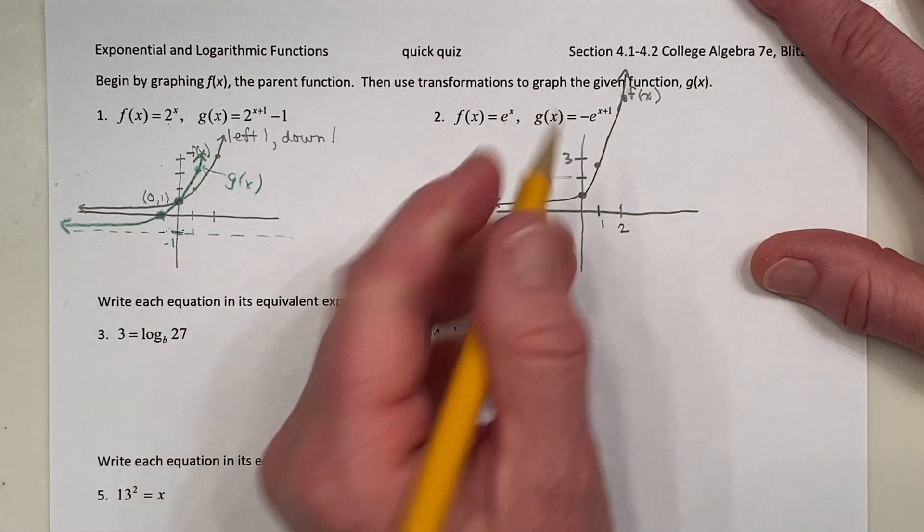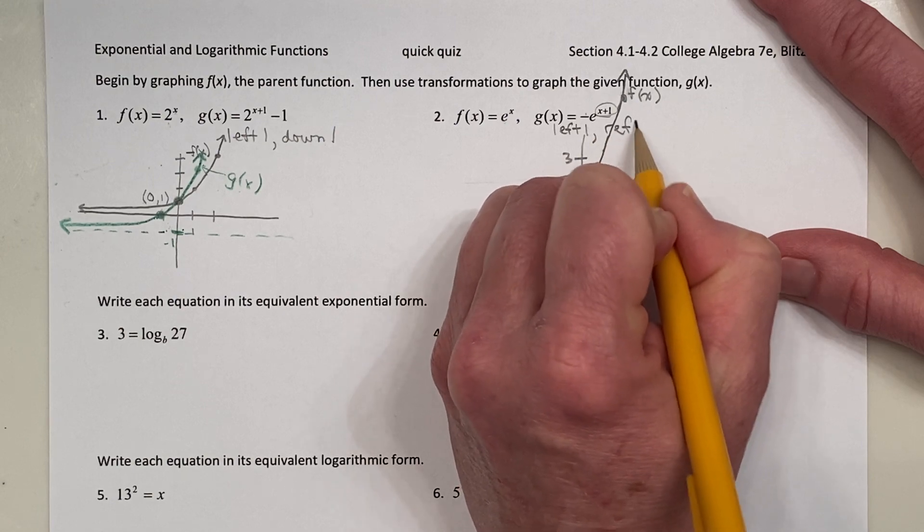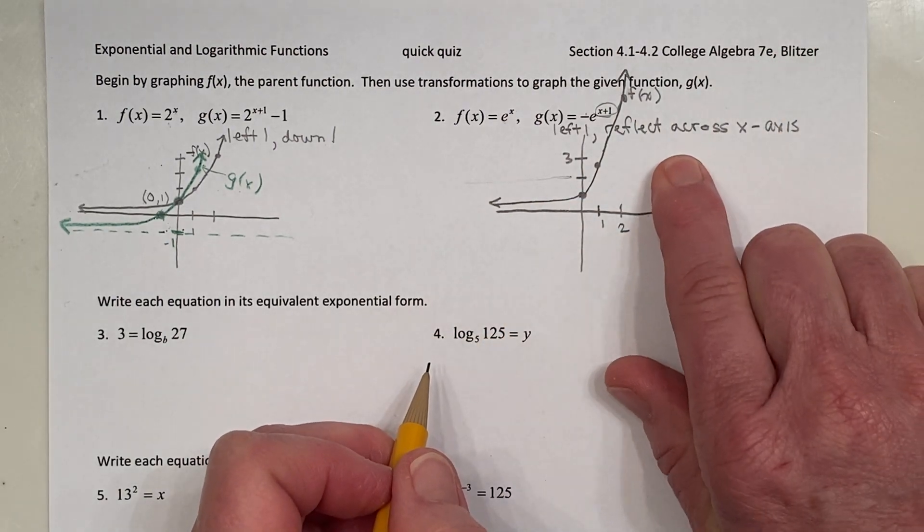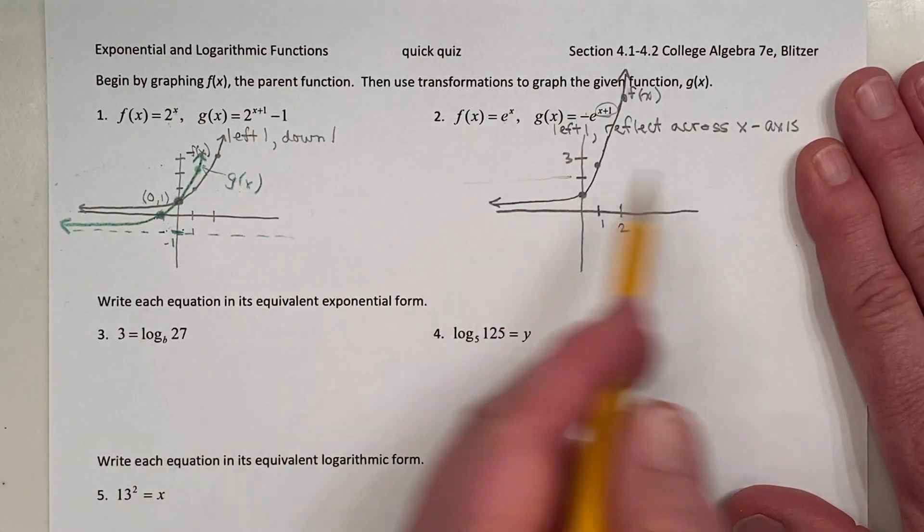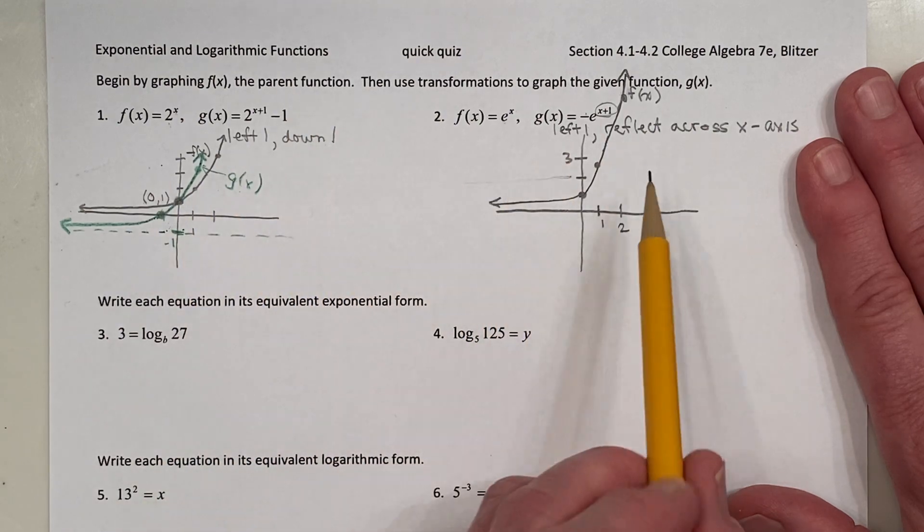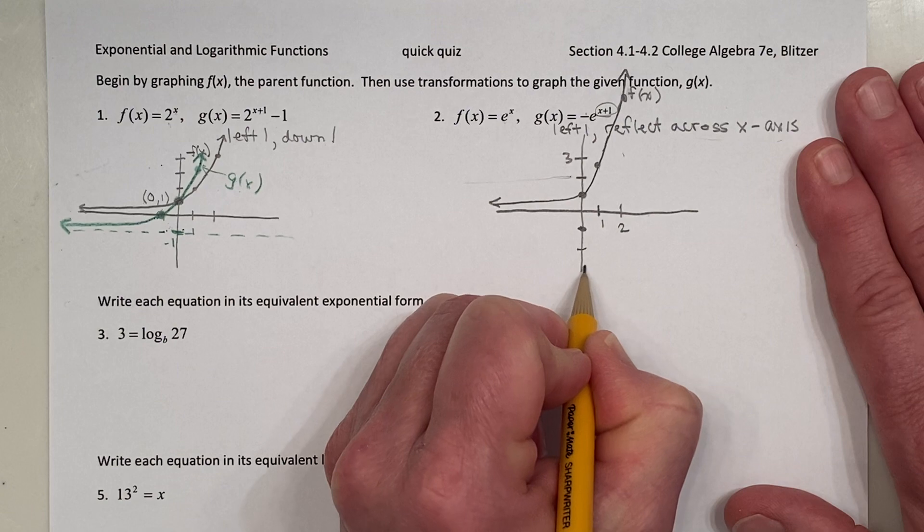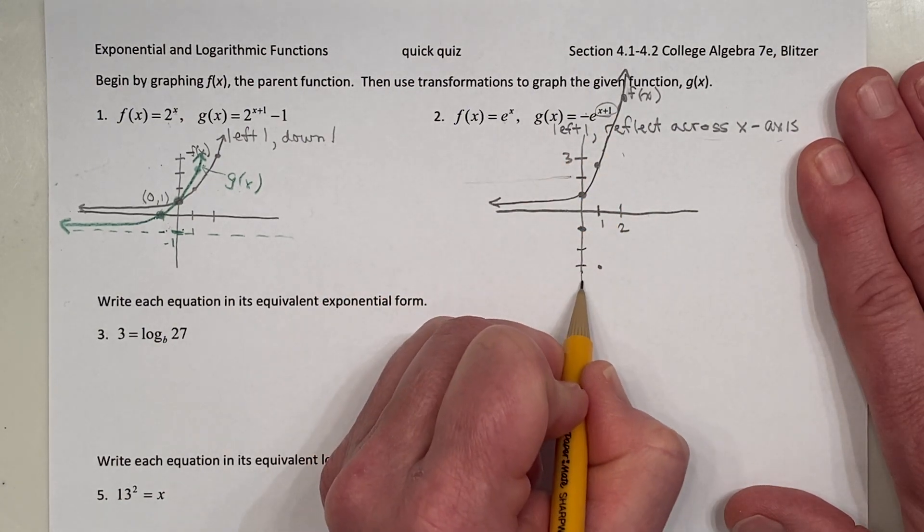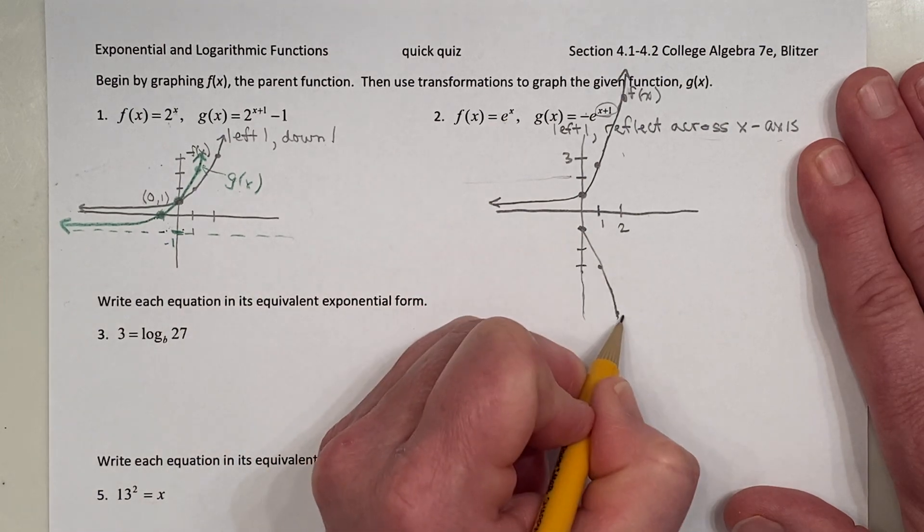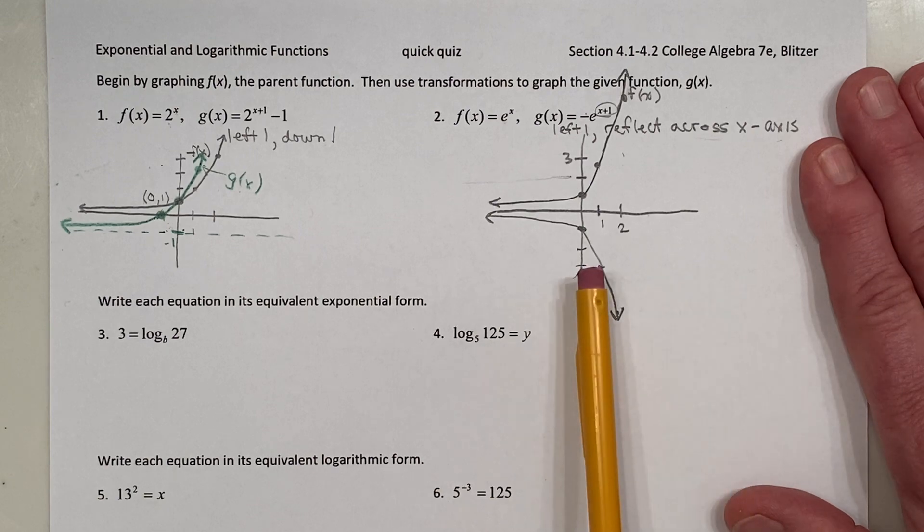Alright, coming back up here to g of x, I see the transformations are left 1 and also a reflection across the x-axis. I try and do the reflections first and then the translations last. So I might take a couple of steps in graphing this. Because there's a couple of steps here and one of them is a reflection, a little bit different than over here where you're just moving points left, right, up or down. Let me reflect across the x-axis first. This point comes down here. This point would come down here. And this point up here would come way down here. It's not perfect, but it is a sketch. Like I said, you'll have a grid to work off of.